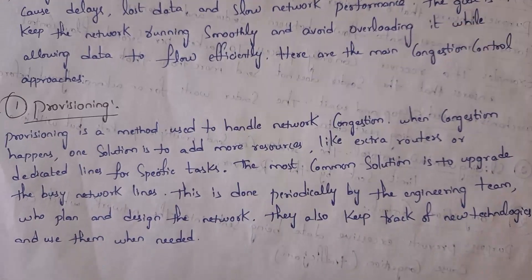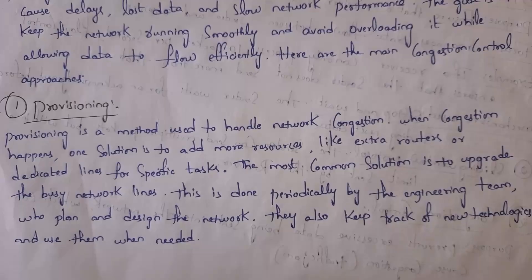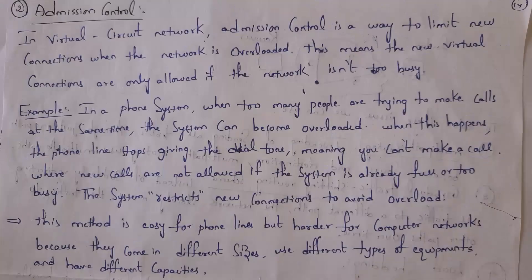The first congestion control approach is provisioning. Whenever congestion occurs in a network, in order to avoid congestion we use the provisioning technique. In provisioning, we add extra resources like routers and cables to avoid congestion. Normally there is an engineering team that identifies network conditions and updates the network whenever new technologies are available. So provisioning — that is, adding extra resources like routers and cables — is done by the engineering team.